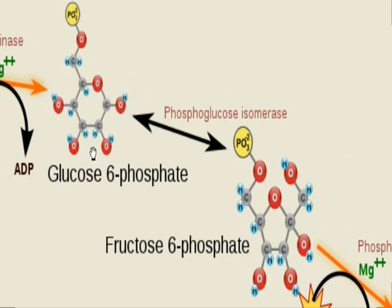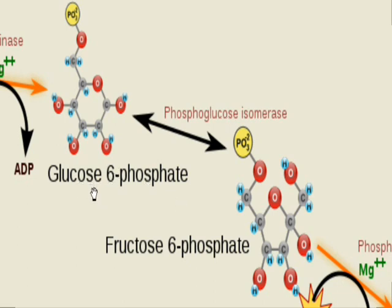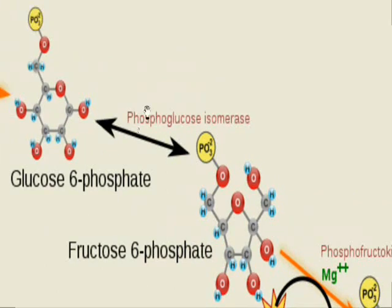In the next step, glucose 6-phosphate is converted into fructose 6-phosphate. Glucose and fructose are isomers, so to convert glucose into fructose we need an isomerase. We use phosphoglucose isomerase to convert glucose 6-phosphate into fructose 6-phosphate. Notice that we haven't added anything at all — we've just changed the structure slightly to get a different molecule.